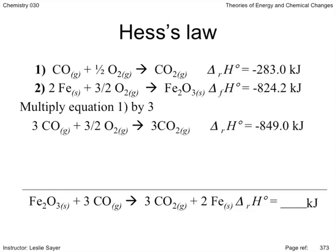Comparing the second given equation to the target equation, I can see that the correct coefficients match up with the important players in the target equation, but the equation needs to be flipped to get the iron metal as a product and the iron-3-oxide as a reactant.